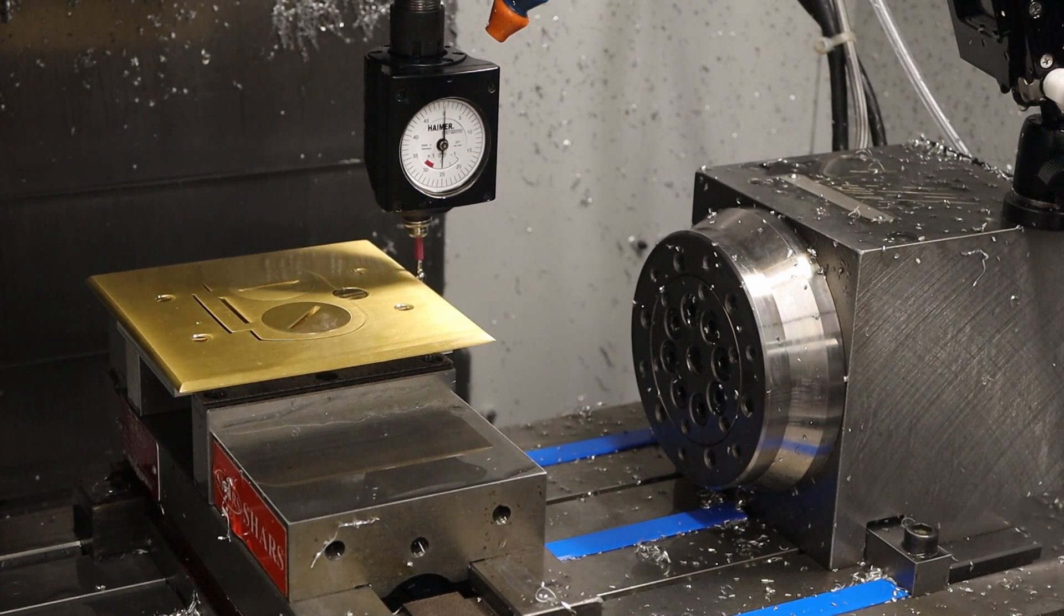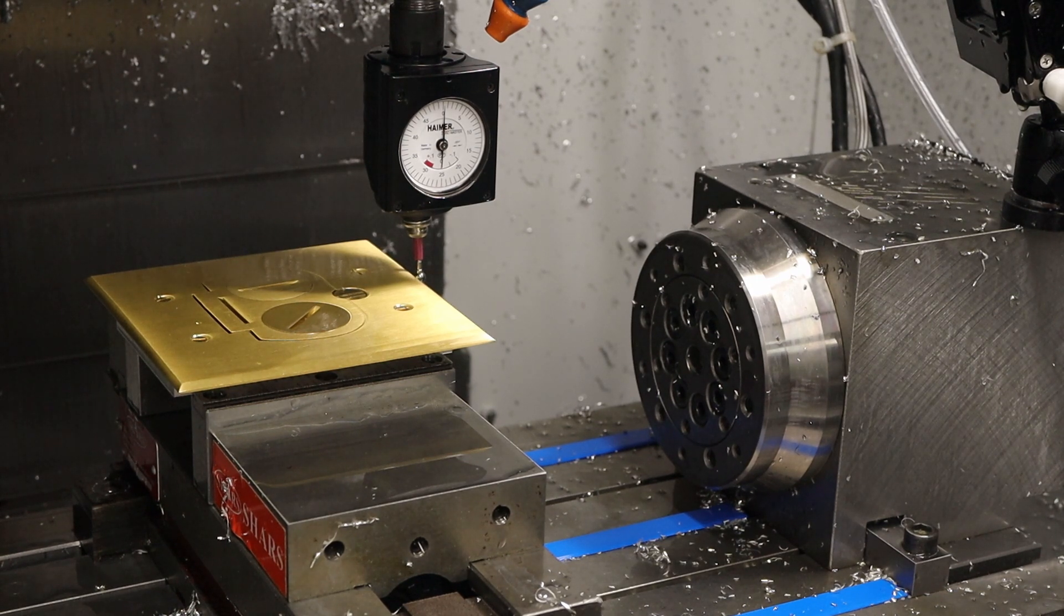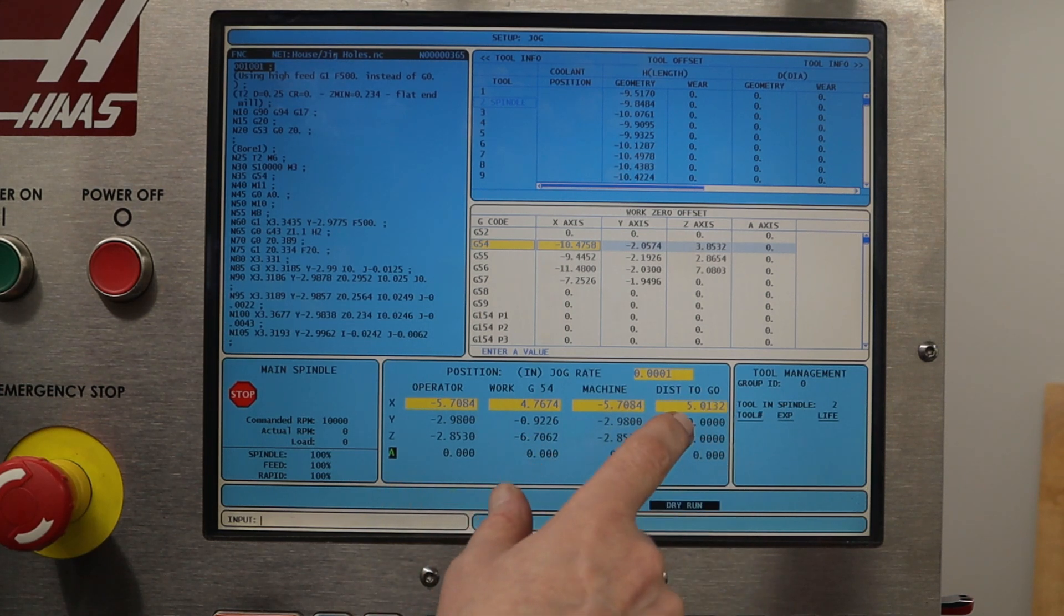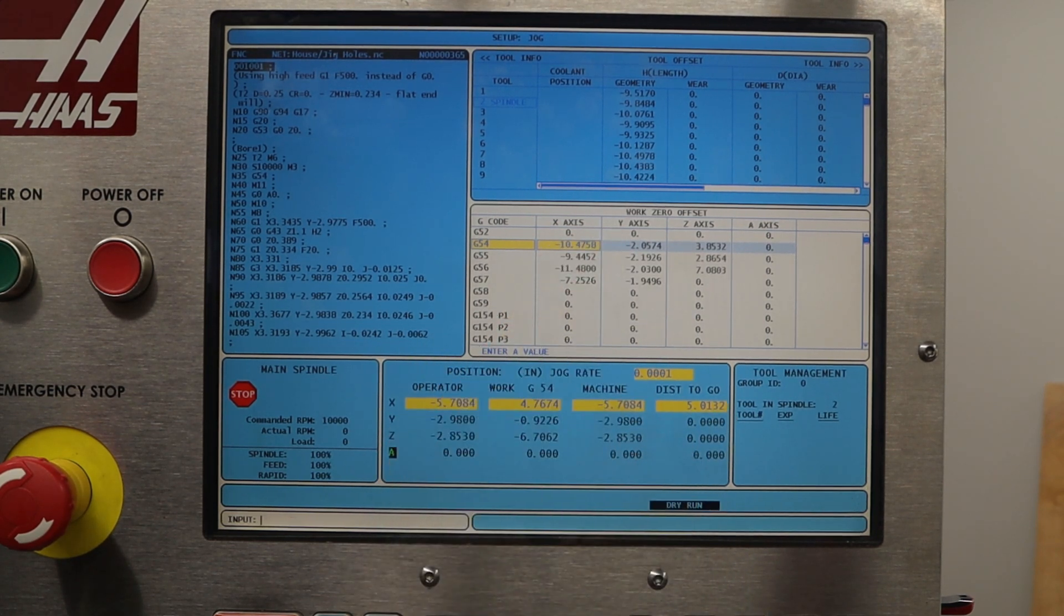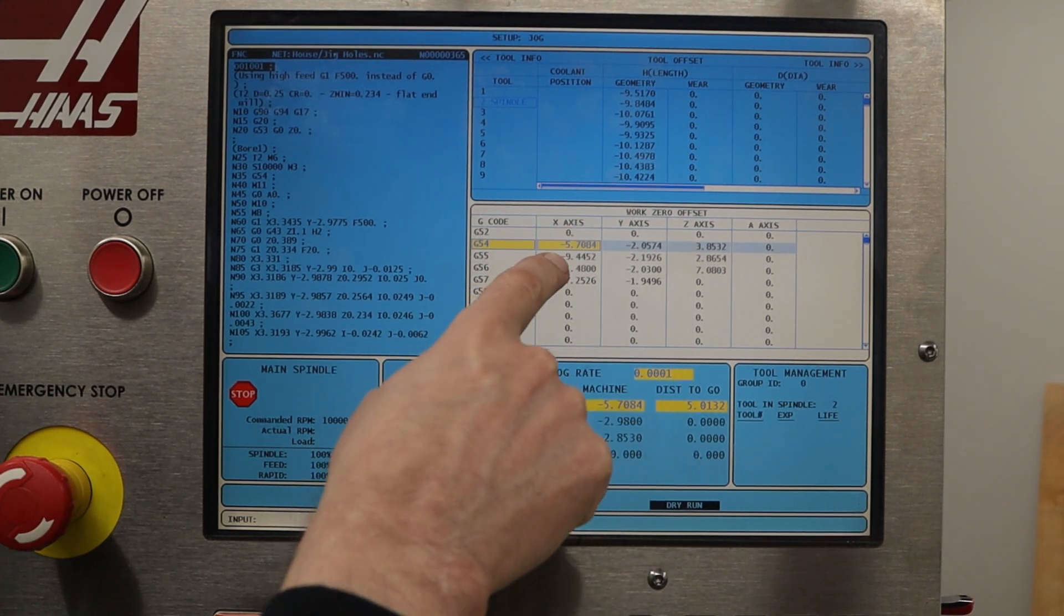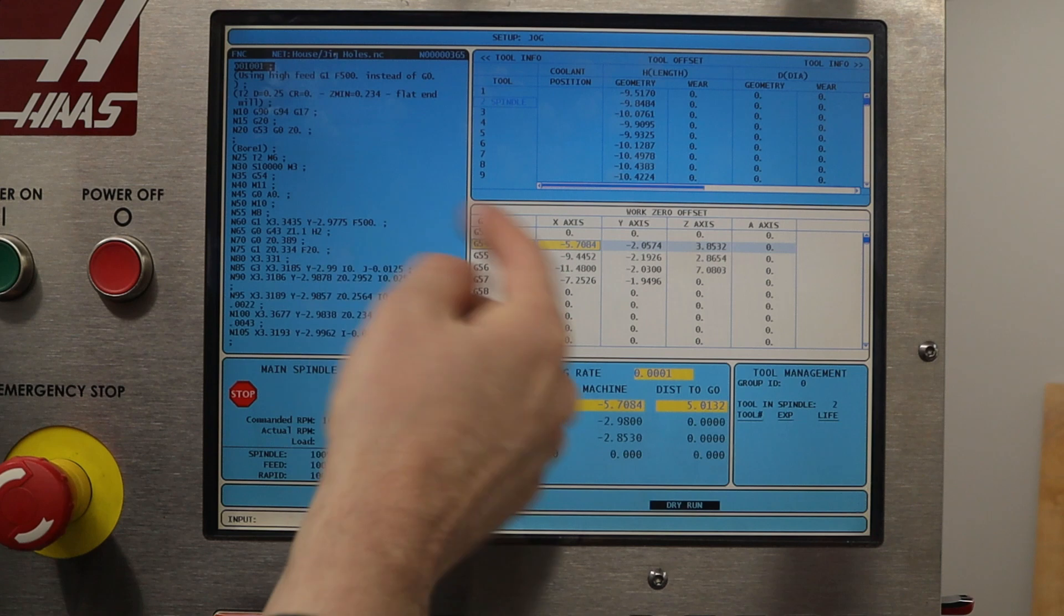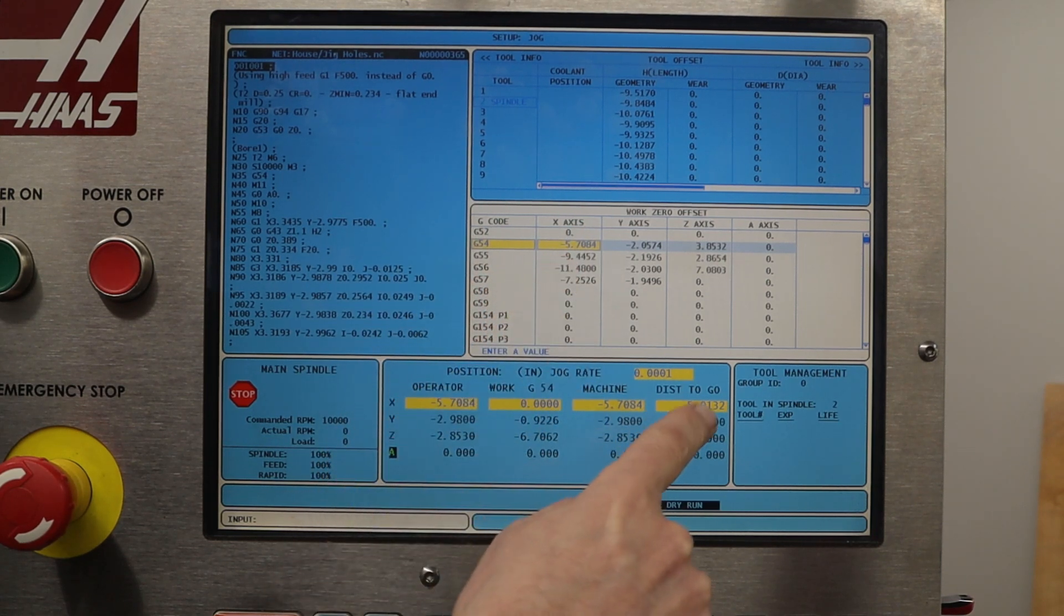So that gives me the distance between them, which I'm seeing as 5.0132. So over here, I have the distance to go, which is where I was reading off the 5.0132. So what I'm going to do is on the X, I'm going to set this at the part zero over here. And then what I need to do is, I need it to be to the left more than that by half of this amount.